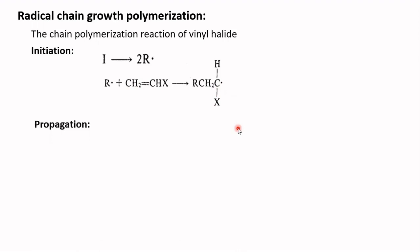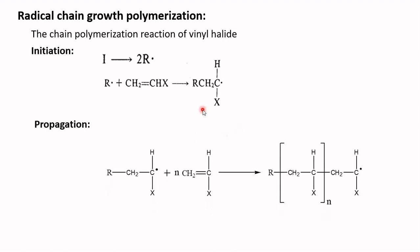The chain radical formed in the initiation step is capable of adding successive monomers to propagate the chain reaction. The chain radical reacts with n number of vinyl halides and propagates the chain. The last step is termination, where polymer growth is terminated by destruction of the reactive center.